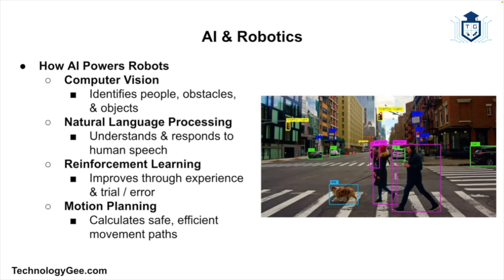What exactly does AI do inside a robot? It can provide computer vision to recognize people, objects, and environments. Some robots use natural language processing to understand and respond to human commands. Some use reinforcement learning to improve performance through trial and error, and some use motion planning to figure out how to move around without bumping into things. AI is the brain and robotics is the body. Without AI, a robot can only follow strict instructions, but with AI it can react, learn, and even make decisions.